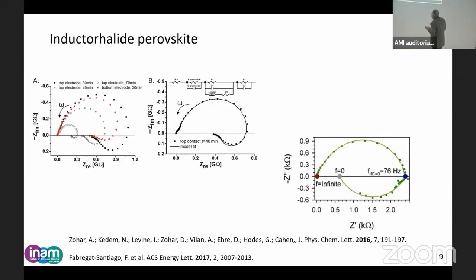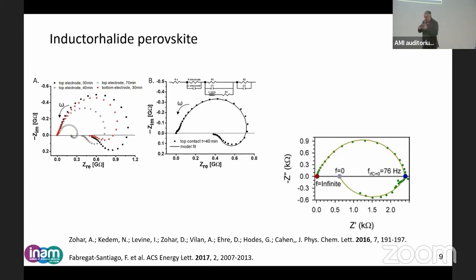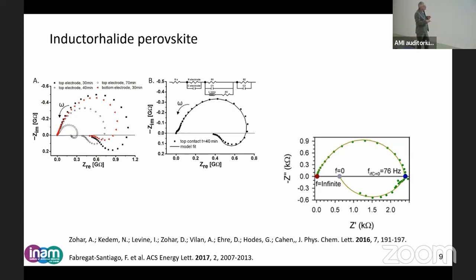Then came this other thing — this looping in the negative capacitor side. A lot of people measured this also. This is from Fabregat, my colleague. He noticed that you reduce a lot of the resistance when you have this loop, and this is not good for a solar cell. So this is a big increase of the recombination resistance, and this is quite relevant and dangerous.